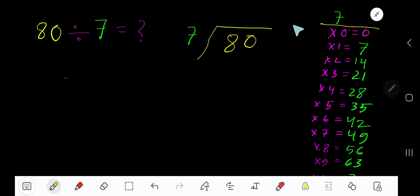8 divided by 7. Here 7 is a divisor, so we need the multiplication table of 7. 7 times 0 is 0, 7 times 1 is 7, 7 times 2 is 14, 7 times 3 is 21, 7 times 4 is 28.